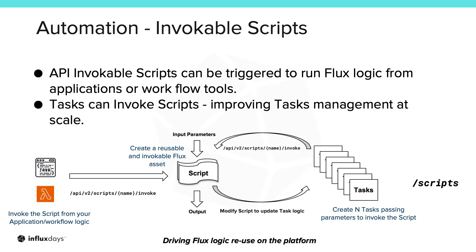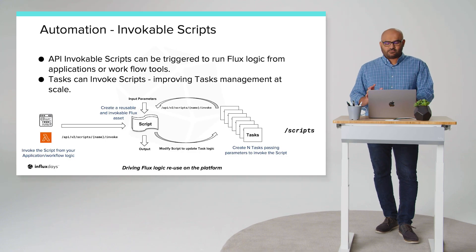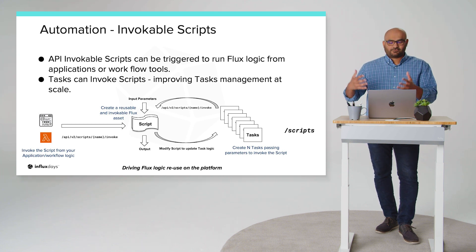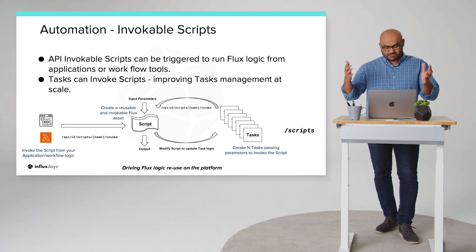Another tool that helps you automate is the scripts endpoint. A script is essentially Flux logic that can be saved as an asset. Additionally, you can parameterize key aspects of the logic — like the input bucket, the output bucket, and the measurements — so that scripts can deliver varying output depending on the input you give them. There are three ways you can use scripts. One is to simply save and share complex Flux logic within your organization. Flux is a powerful language, but you have to learn it, so sharing Flux within your organization helps democratize those skills across your org.